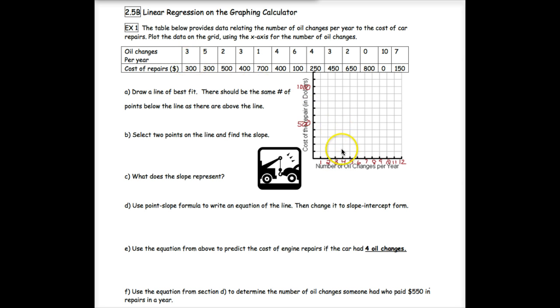So plotting the points, 3 oil changes and the cost of repair was $300, so that's this point right here. Then 5 oil changes also had a cost of $300. 2 oil changes and the repairs cost $500 that year. 3 oil changes and $400. 1 oil change and $700 in repairs. 4 and $400. 6 and $100. 8 and $400. 9 and $250, so right halfway between the $200 and the $300.